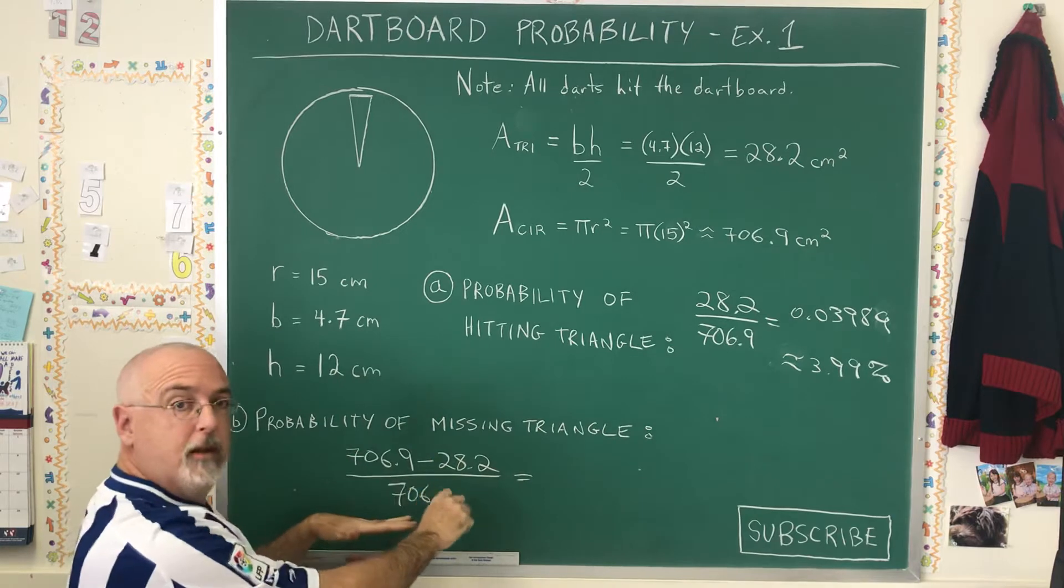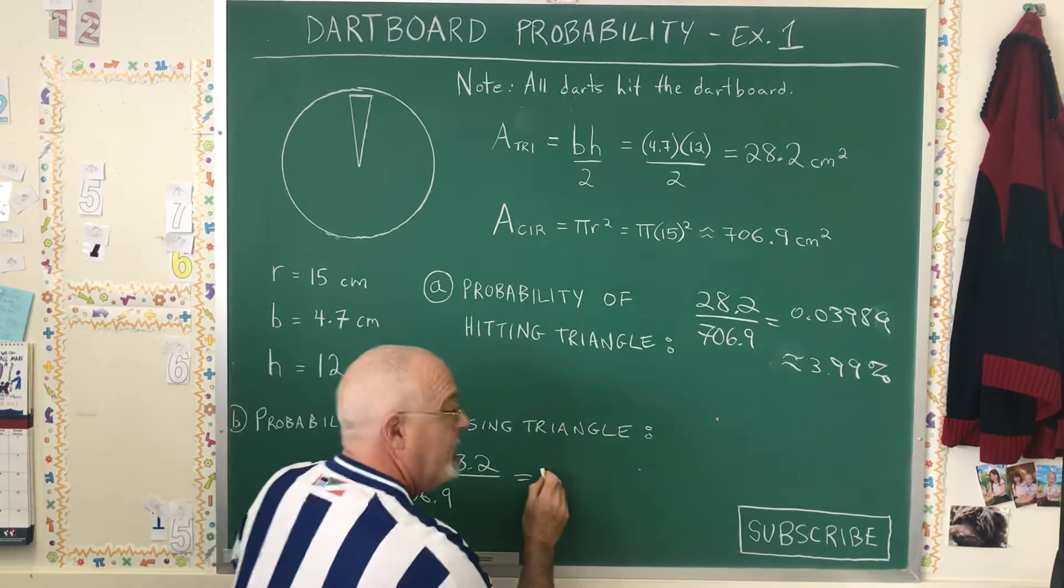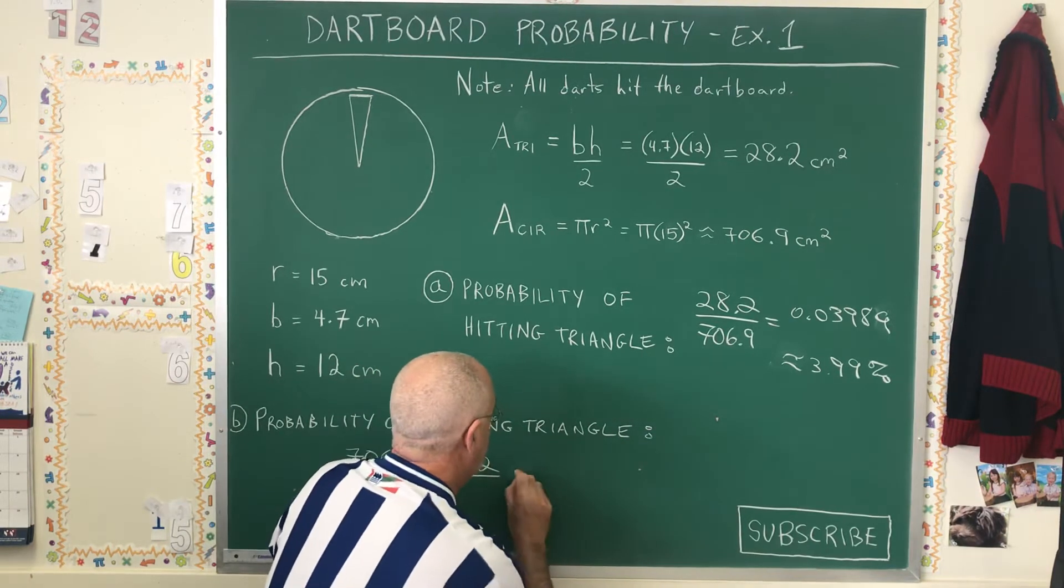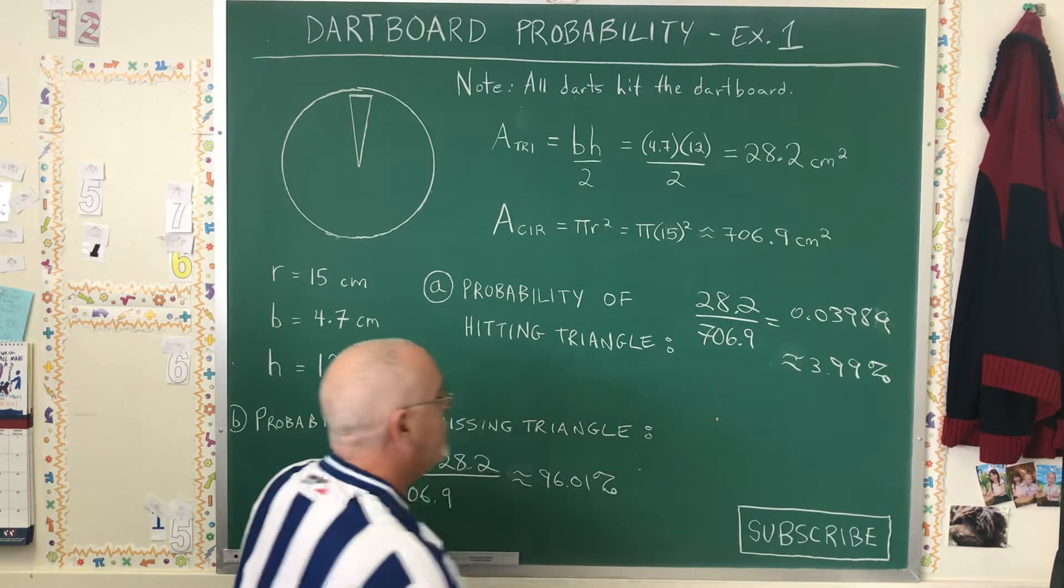Our total is still the area of the circle. Once we do this calculation, we will get a percent answer of approximately 96.01%. But